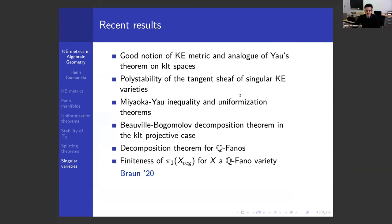One more recent result worth mentioning — Daniel mentioned it briefly — is a spectacular result by Lucas Braun: if you have a Q-Fano variety, the fundamental group of the regular locus might not be zero (e.g., take a quotient of P^N by a group acting freely in dimension one), but the result says it is actually finite. A quite striking result.